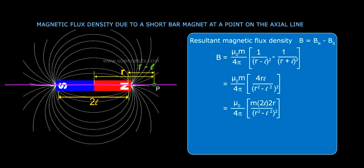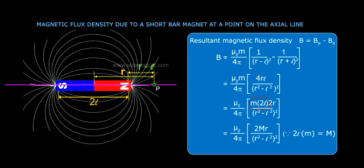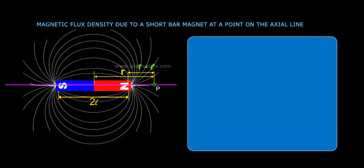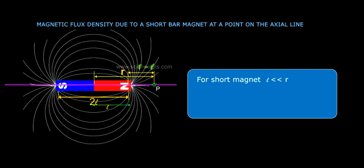Since 2l × m equals the magnetic moment M, for a short magnet where l is much less than r, B equals μ₀/4π × 2M/r³ along SN.